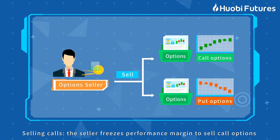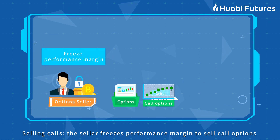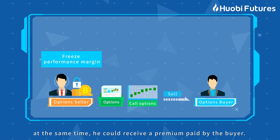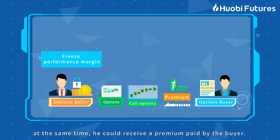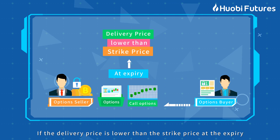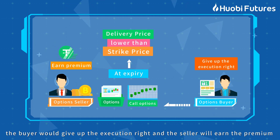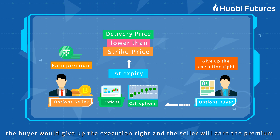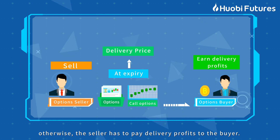Selling Calls: The seller posts performance margin to sell call options. At the same time, he could receive a premium paid by the buyer. If the delivery price is lower than the strike price at expiry, the buyer would give up the execution right and the seller will earn the premium. Otherwise, the seller has to pay delivery profits to the buyer.